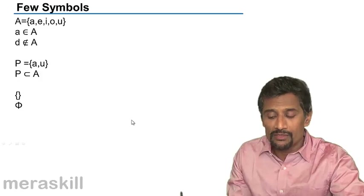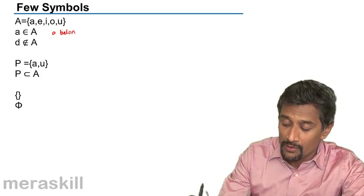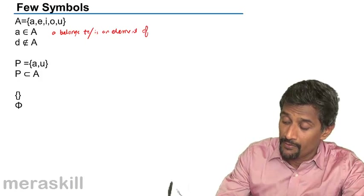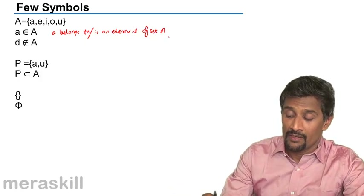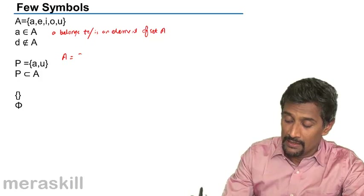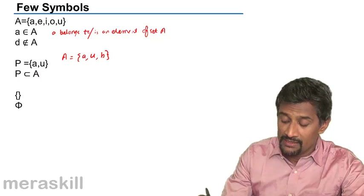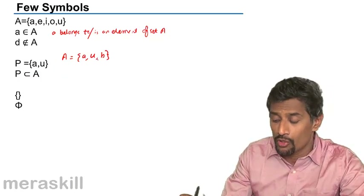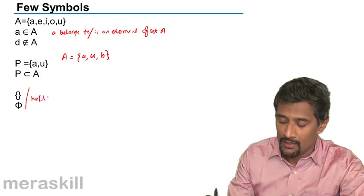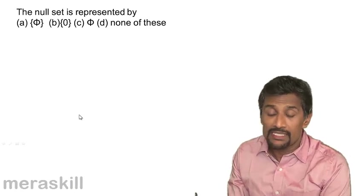We have a few symbols: 'a ∈ A' means small a belongs to the set A — a is an element of set A. 'd ∉ A' means d does not belong to A. If P is {a, u} and A is {a, u, b}, then P is a subset of A, meaning A contains all the elements present in P. Phi or empty brace bracket means null set.